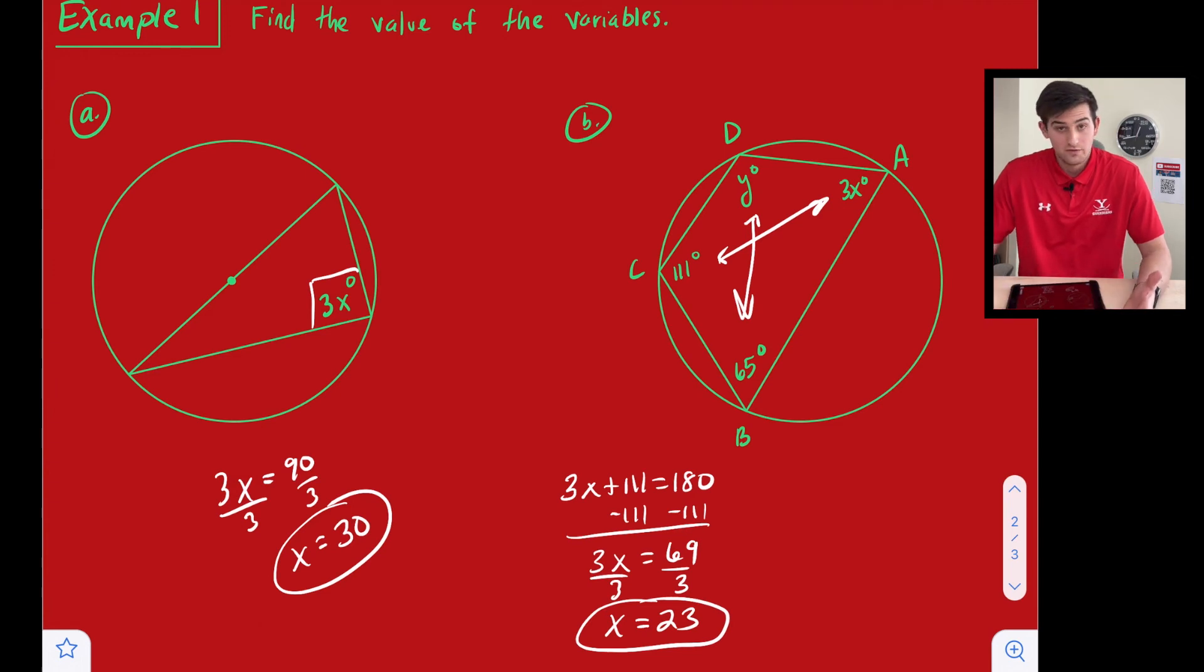Okay, so that's one of our variables. And now let's look at angles B and D. So we can say 65 plus Y is equal to 180. Let's subtract 65 from both sides, and we get Y is equal to 115.